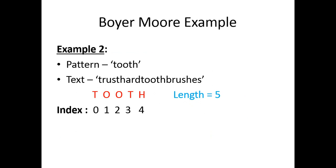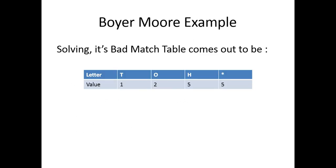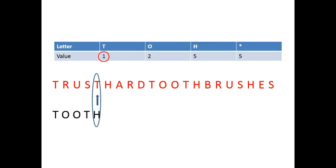Let's take one more example to make it more clear. The pattern is 'truth' and the text is 'thrust hard toothbrushes'. The length is 5 and we mark the index accordingly. You can create the bad match table yourself — here is the completed bad match table for this example.